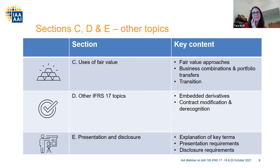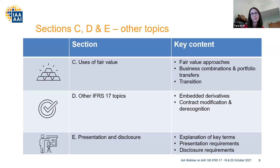Chapter ten talks about fair value approaches. Fair value comes up in a couple of uses in IFRS 17 — notably transition calculations, which are just a couple of months away for many companies, and also any business combination uses of fair value. Then in chapter eleven, there is a discussion of business combinations and portfolio transfers more generally and how IFRS 17 would apply to those. There's a big interaction between chapters ten and eleven with the fair value and business combinations themes.